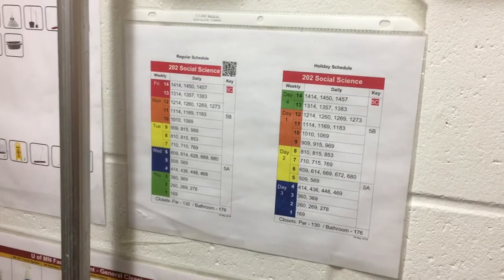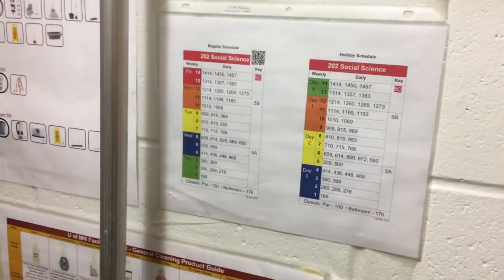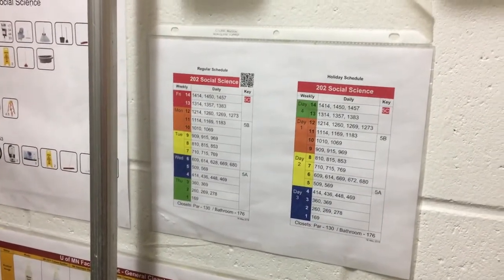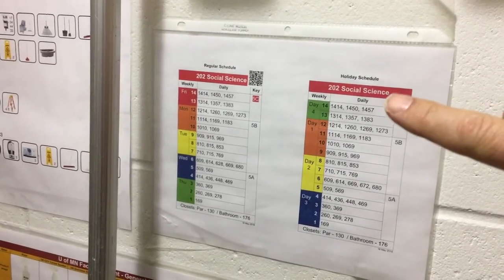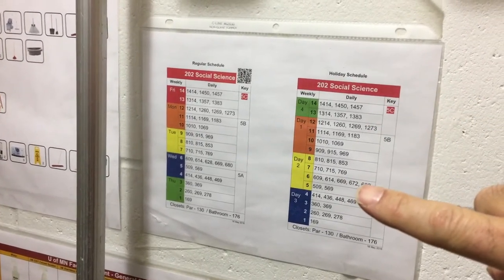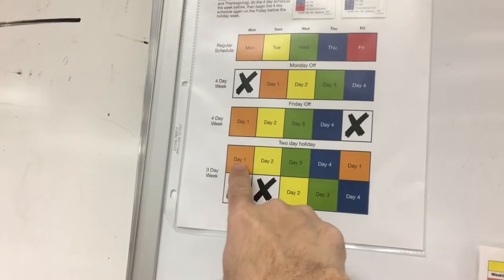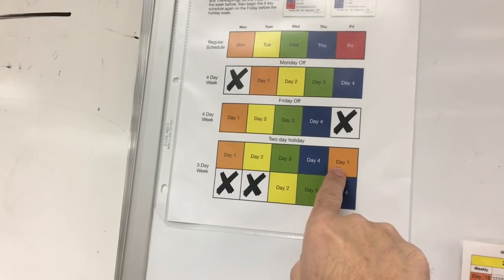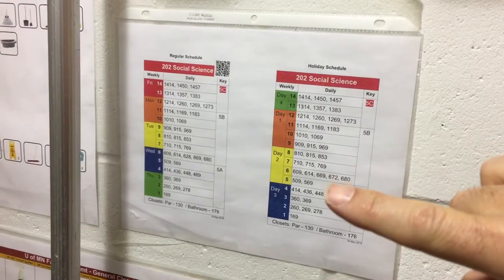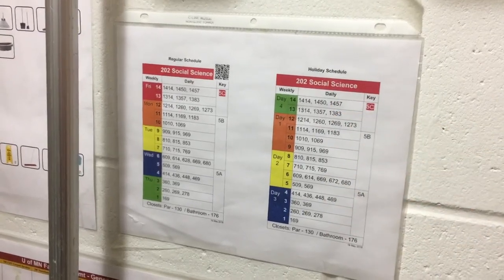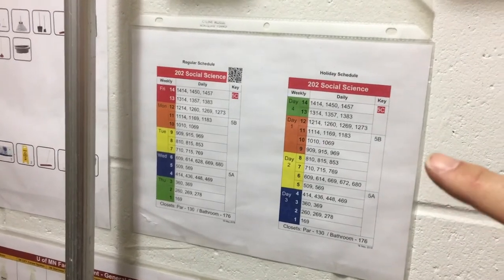A couple times a year we have a three-day schedule around Thanksgiving and Christmas. We can just do the four-day schedule on the week before, which leaves us Friday to start over again with day one. Then we have three days left on the next week and we do days two, three, and four.